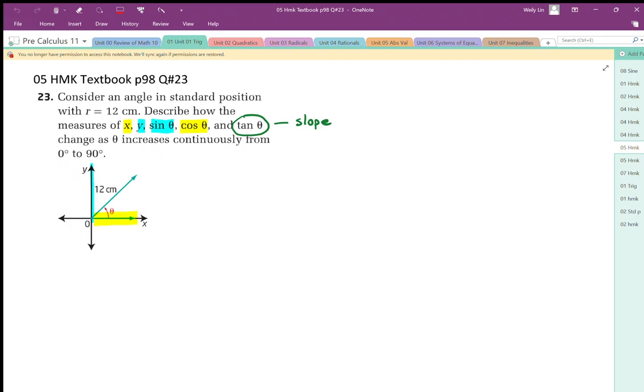Question number 23 on page 98 says we have an angle in standard position with a radius of 12. So it looks like this in the diagram, and we have an angle theta. We want to know how x, y, sine, cosine, and tan change as that angle theta increases from 0 degrees at horizontal to 90 degrees at vertical.